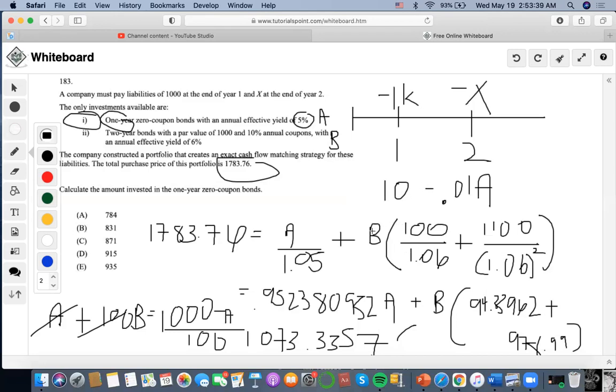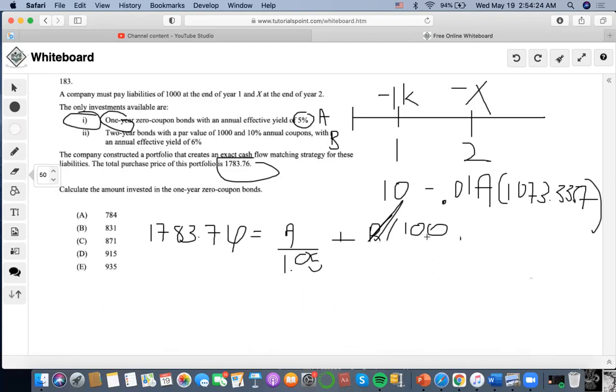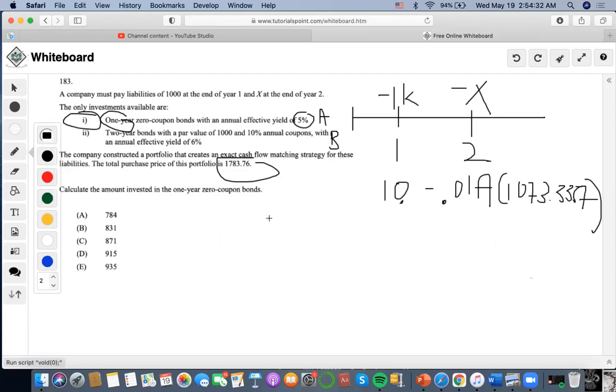This equals B, right? So we're able to input this equation as B. So we cross out B and we'll just have this equation times 10 times 1073.3357.